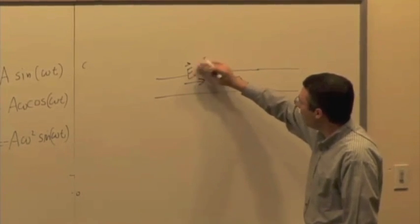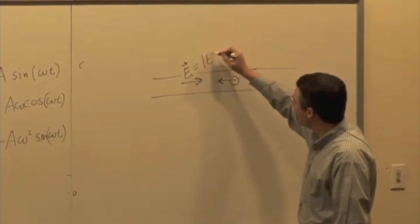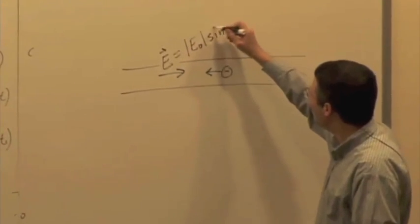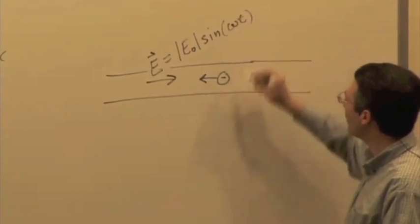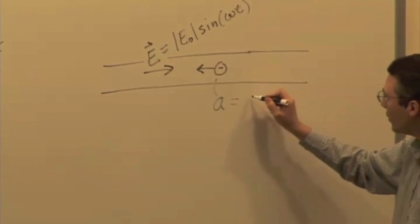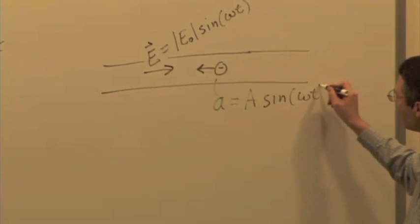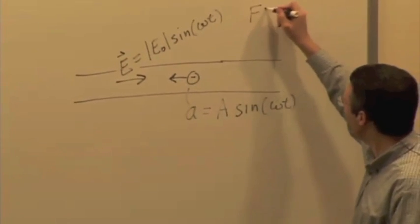But you might have an electric field that is some magnitude times the sine of some function, some sine function. And so the acceleration of these charges is going to be sinusoidal as well, some amplitude times the sine omega T, because the force is just Q times E.